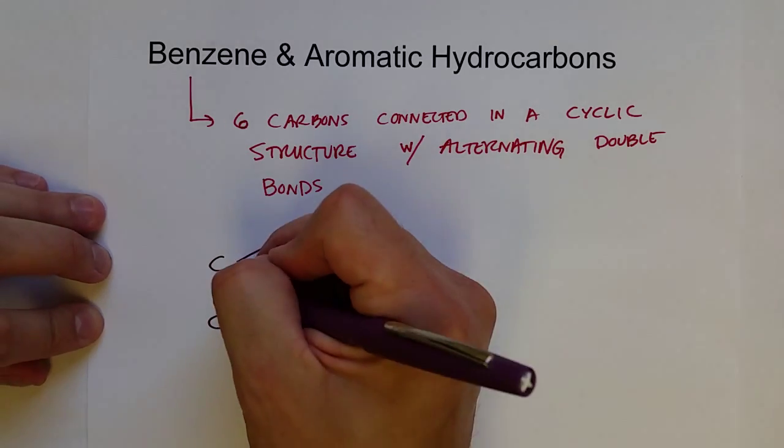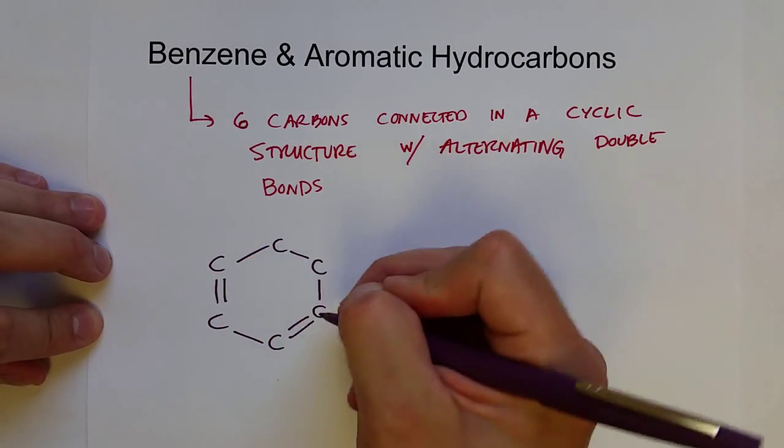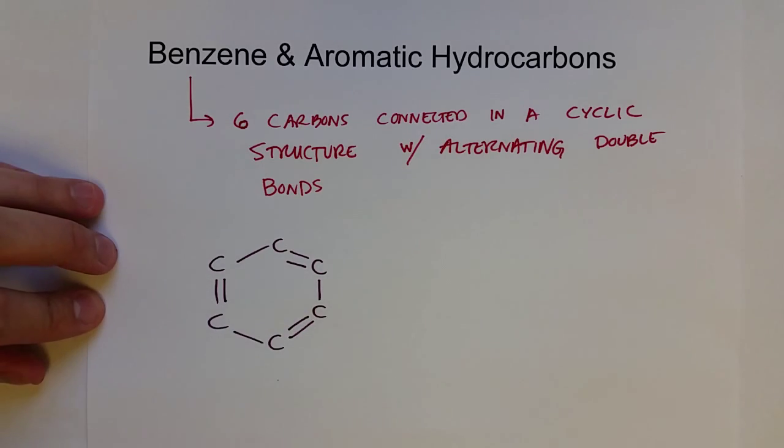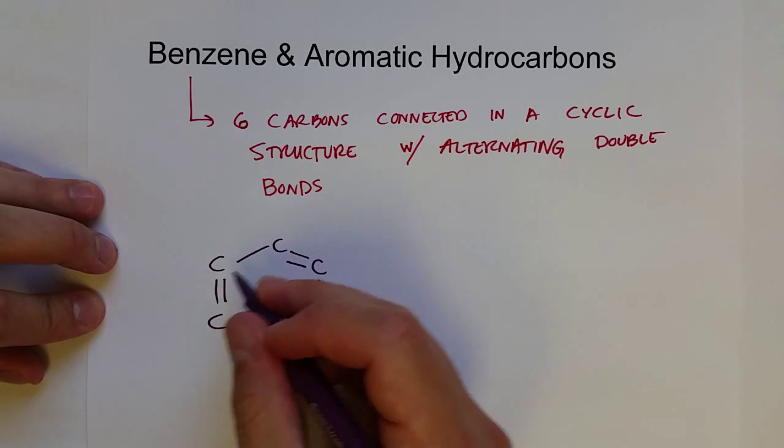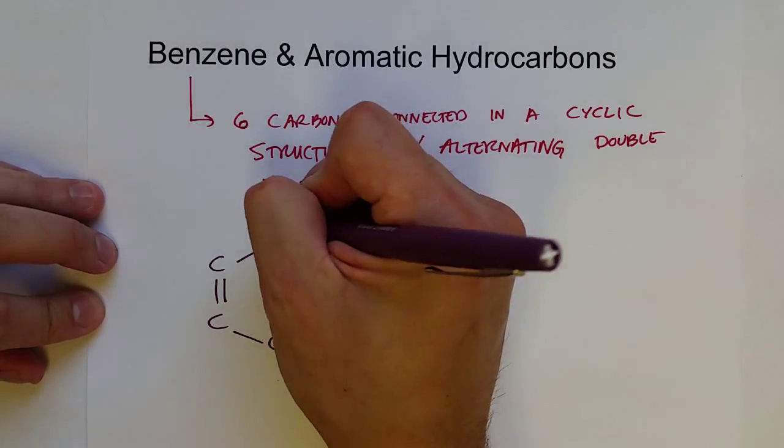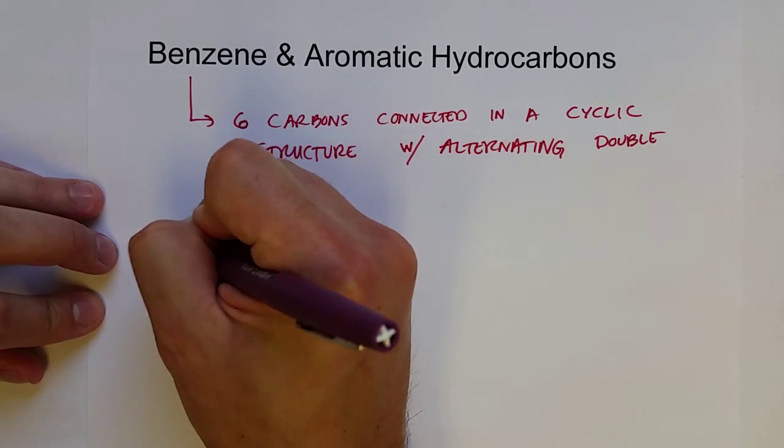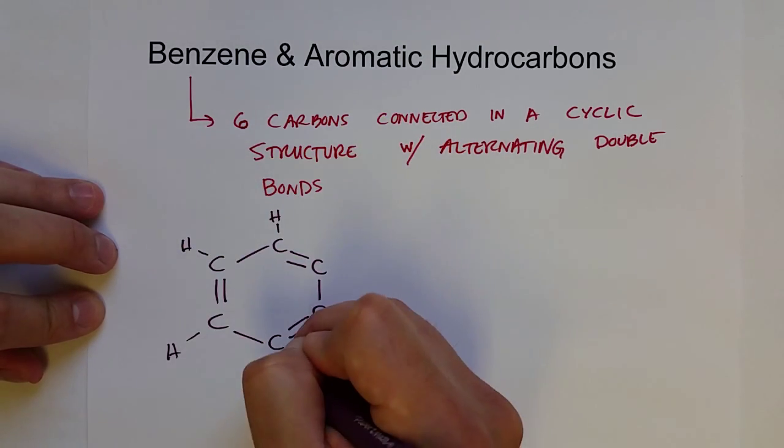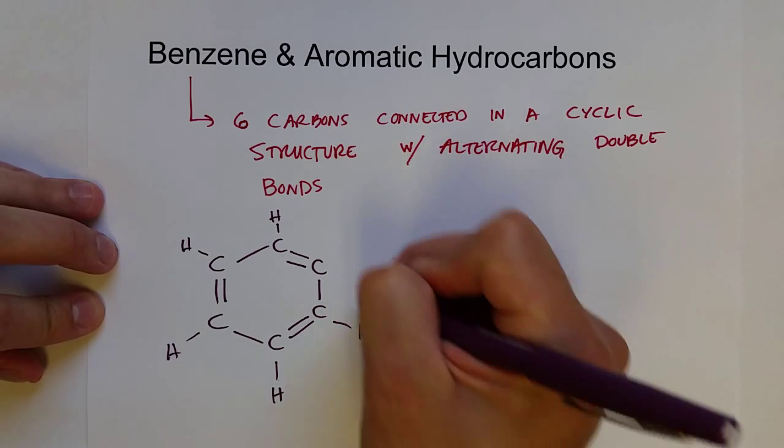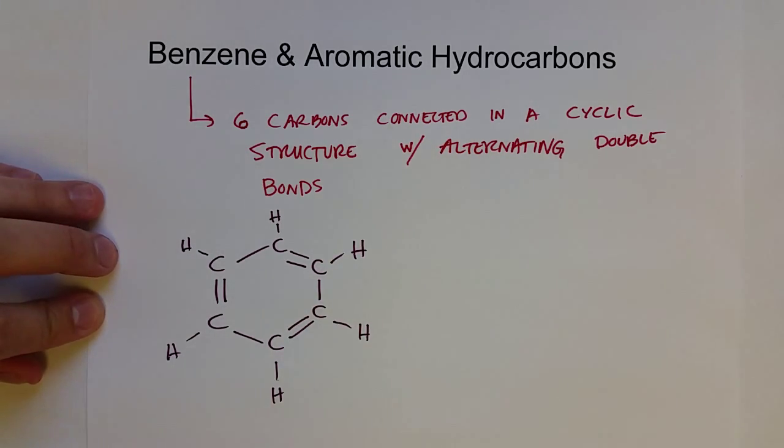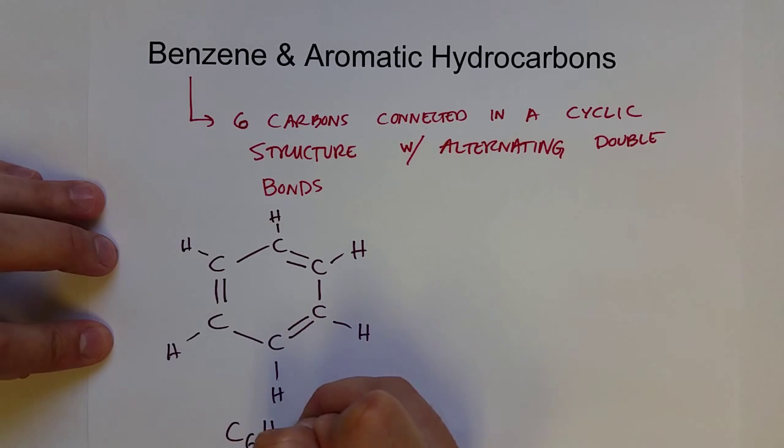they've got alternating double bonds. So every other carbon has a double bond, or there's a double bond every other bond. And so we know that each carbon has four bonds, so every carbon is also connected to one hydrogen, like so. And so the formula for benzene is C6H6.